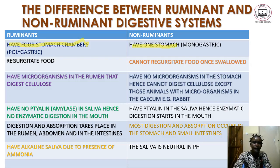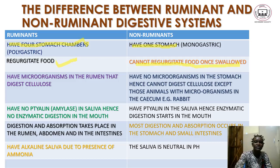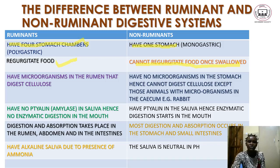Another difference is that ruminant animals do regurgitate food — meaning once they swallow the food, it will come back to the mouth to be re-chewed. While in non-ruminant animals they cannot regurgitate; once the food is swallowed it does not come back to the mouth.